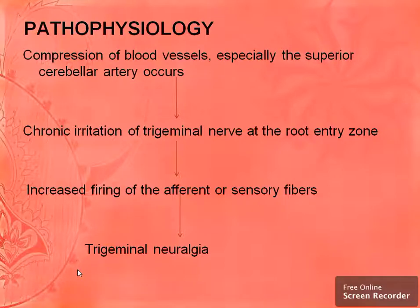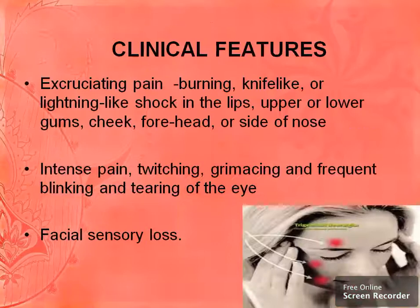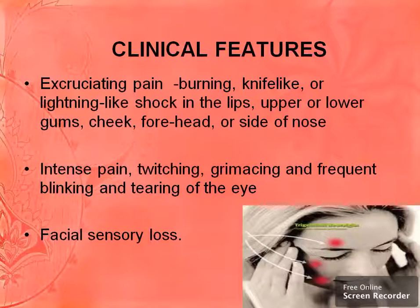The clinical features of trigeminal neuralgia include excruciating or burning pain — like someone is pinpointing or a lightning shock — in the lips, upper or lower gum, cheeks, forehead, or side of the nose. There will be intense pain, twitching, grimacing, and frequent blinking and tearing of the eye, where tears flow frequently from the eyes.